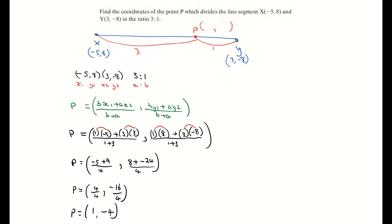So the coordinates of the point P are (1, -4). And that's basically what the question wanted us to find.